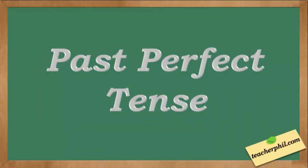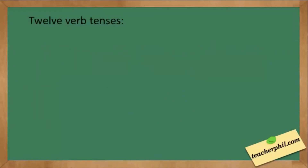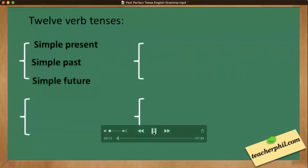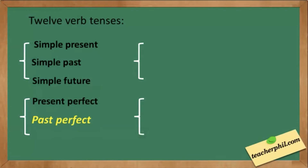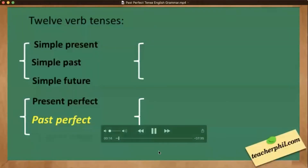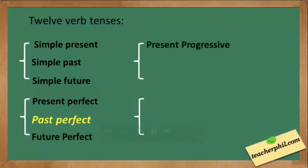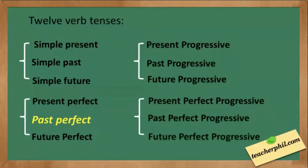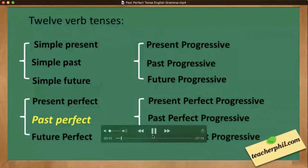First of all, before talking about past perfect tense, let's revise all the verb tenses: simple present, simple past, simple future, present perfect, past perfect, future perfect, present progressive, past progressive, future progressive, present perfect progressive, past perfect progressive, and future perfect progressive. This lesson we are going to talk about past perfect tense.